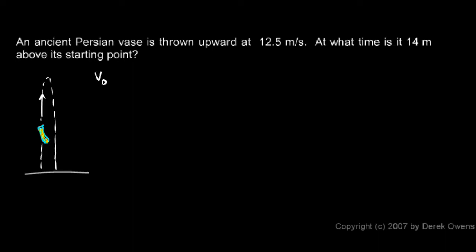We know the initial speed is 12.5 meters per second. We'll call up positive. When we say this, the initial speed is 12.5 meters per second, we've already decided that up is positive. If down were positive, that would have to be negative because the initial speed is upward.